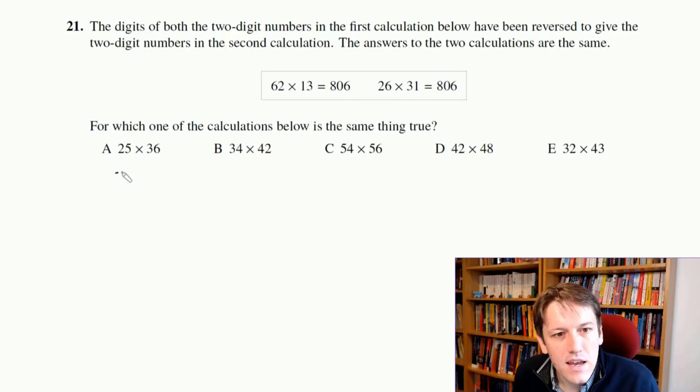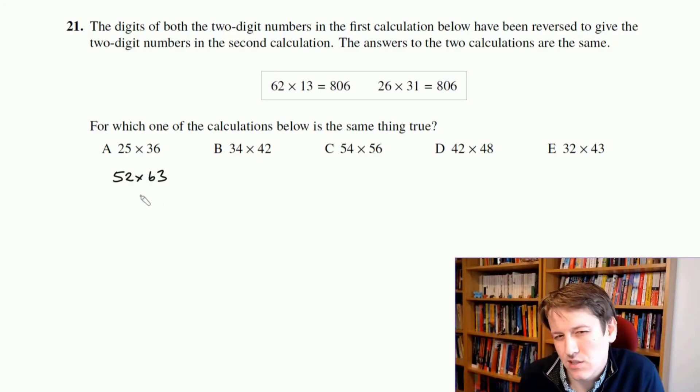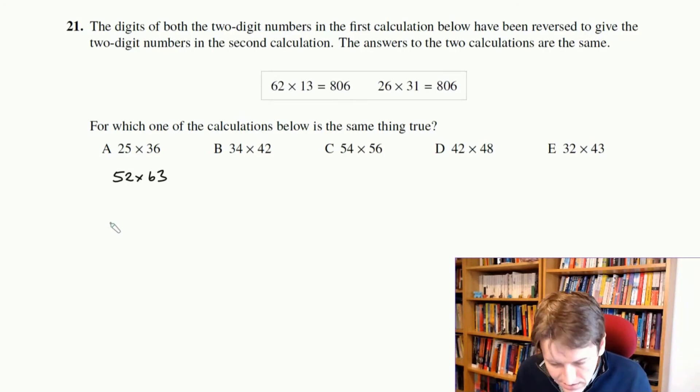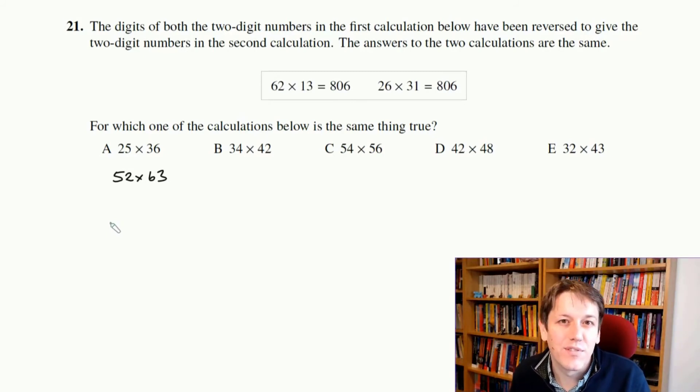So in A, it would be 52 times 63, right? Now, I don't need to do the calculation to know that these are not the same, because I know that multiplication preserves last digits. That's another idea that I go through in one of the introductory videos in the full course, Go for Gold in the Junior Maths Challenge. So here I just check 5 times 6 ends in 30, ends in a 0, 2 times 3 ends in a 6, so they can't be equal.